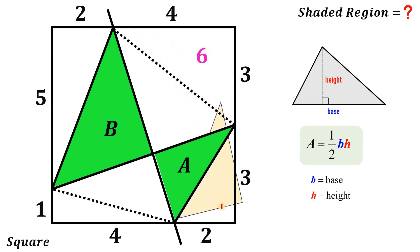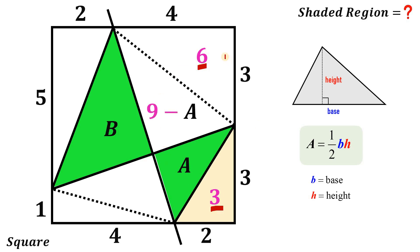Now the area of this white triangle: the base is two and the height is three, so the area is three square units. We know the area of this trapezoid is 18. We now have six plus three, a total of nine. Therefore, this white triangle must be equal to nine minus A. So if we add all of this area, we cancel out A and we end up with 18, which is half the area of the square.